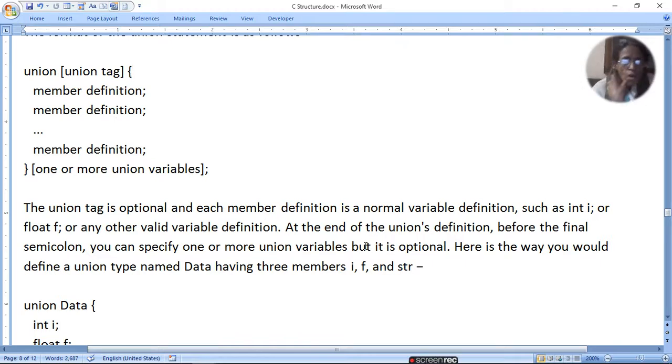The union tag is optional, and each member is defined as a normal variable definition, just like other variables. You can use int, float, or any other valid variable definition. At the end of the union definition, before the final semicolon, you can specify one or more union variables, but it is optional. You can define many members, but only the last member defined can be accessed, otherwise it will give an error.